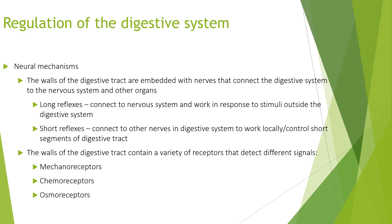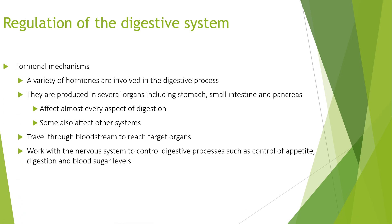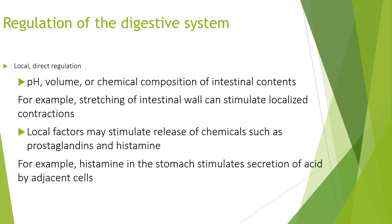The walls of the digestive tract contain a variety of receptors detecting different signals, such as mechanoreceptors, chemoreceptors, and nociceptors. A variety of hormones are involved in the digestive process, produced in several organs including the stomach, small intestine, and pancreas, affecting almost every aspect of digestion. These hormones travel through the bloodstream to reach target organs and work with the nervous system to control appetite, digestion, and blood sugar levels. Local factors directly regulate the pH, volume, or chemical composition of intestinal contents — for example, stretching the intestinal wall can stimulate localized contractions, and local factors can release chemicals such as prostaglandins and histamine. Histamine in the stomach stimulates the secretion of acid by adjacent cells.